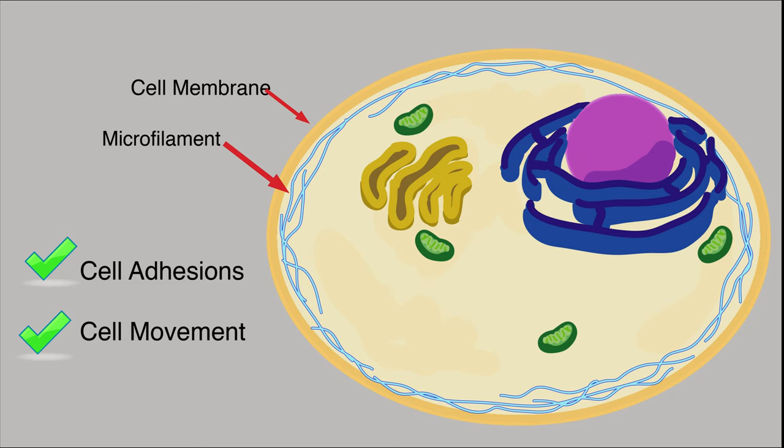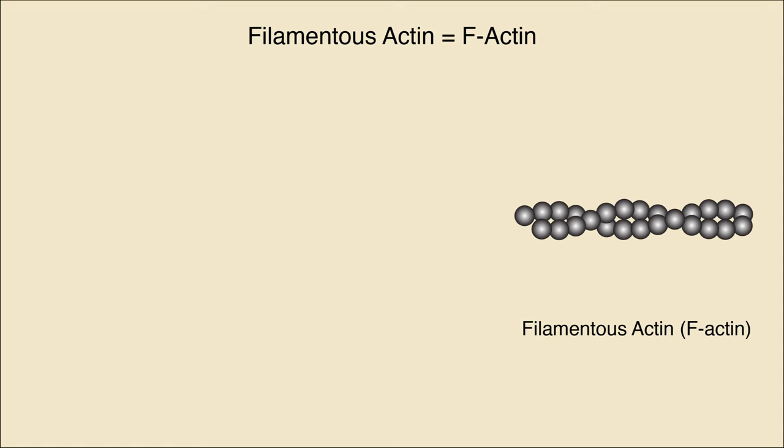With these functions in mind, let's now take a closer look at the structure of actin and how it is assembled. Filamentous actin, also called F-actin, is a linear polymer consisting of a helical structure made of monomers called globular actin or G-actin.